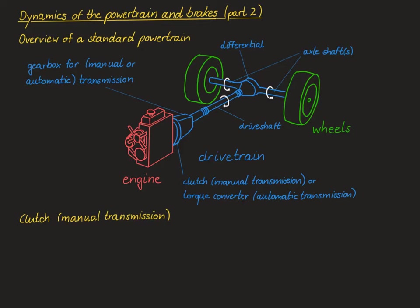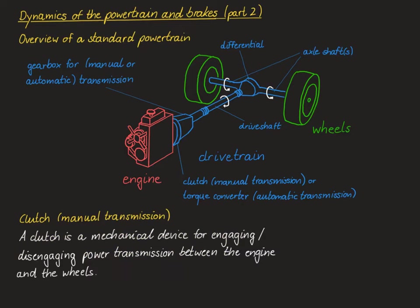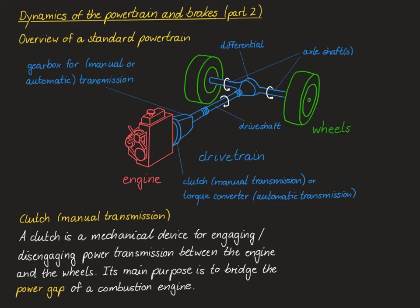For cars with a manual transmission the first element behind the engine is a clutch. A clutch is a mechanical device for engaging or disengaging power transmission between the engine and the rest of the driveshaft and ultimately the wheels. Its main purpose in vehicles is to bridge the so-called power gap that all combustion engines have — meaning the engine is not able to deliver arbitrarily low amounts of power and has a certain threshold below which it cannot deliver any power.